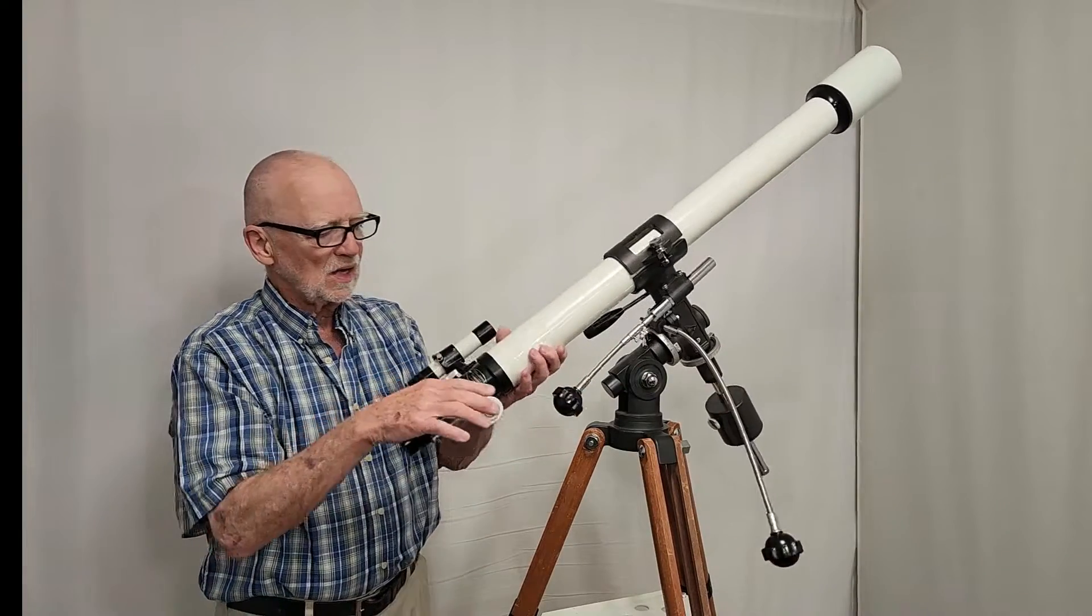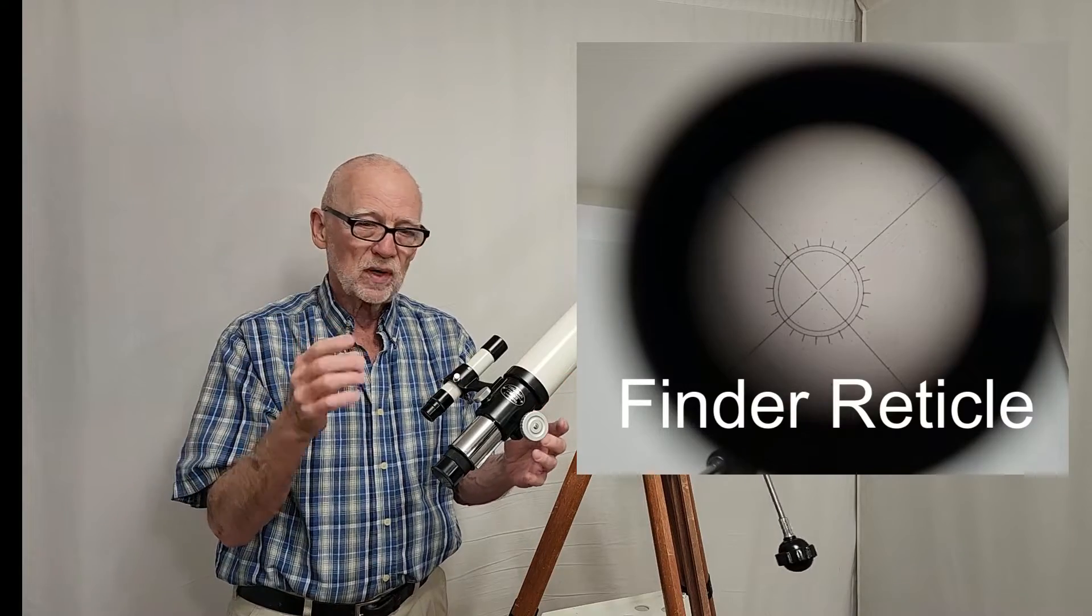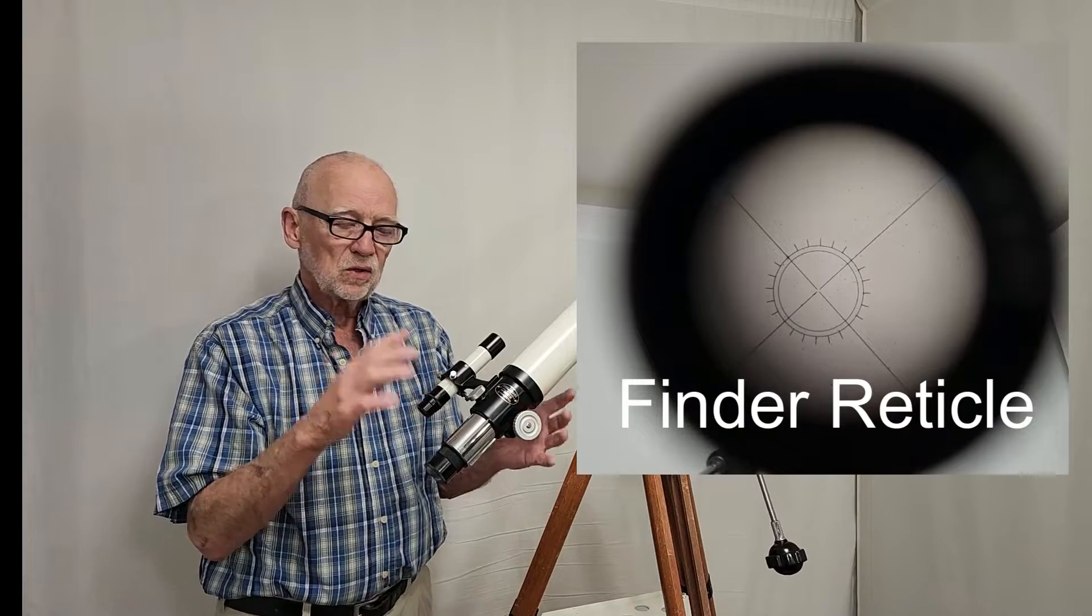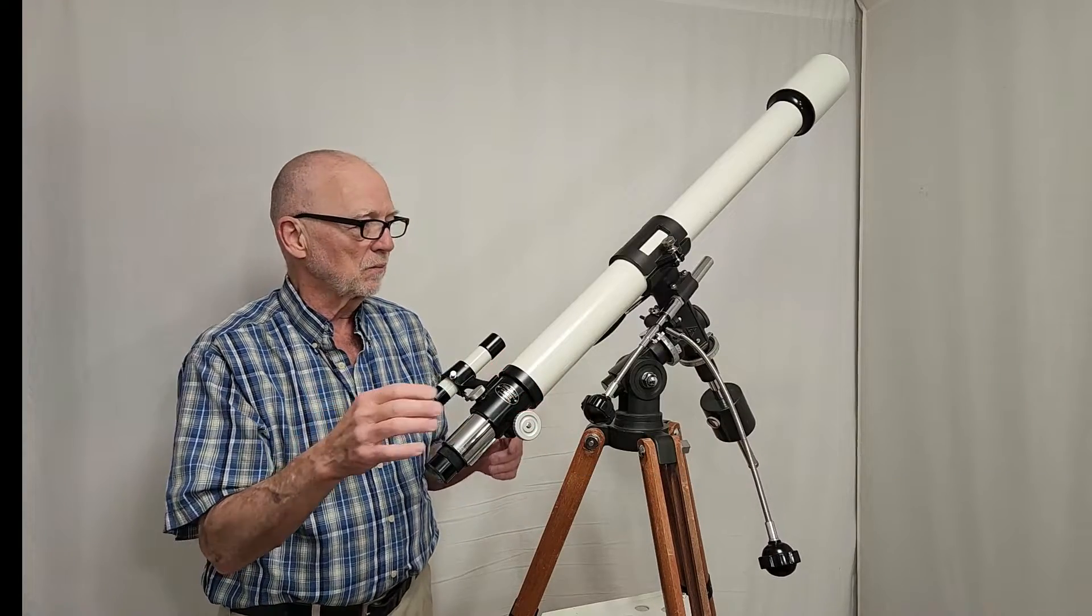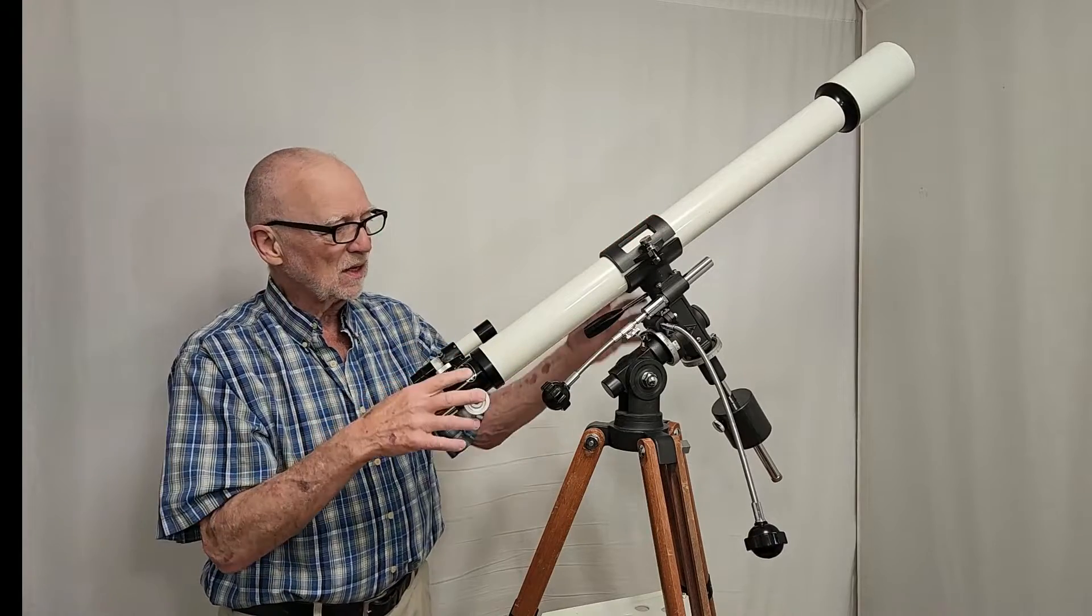Oddly enough, it even has, the D-type has a finder with a special reticle in it. Here's a picture of that. Anyway, with the special reticle in it, you can use the finder for polar alignment, for precise polar alignment. For some reason, they put that on this mount.